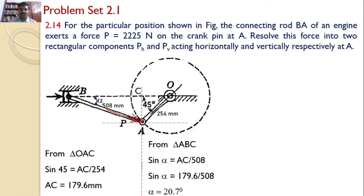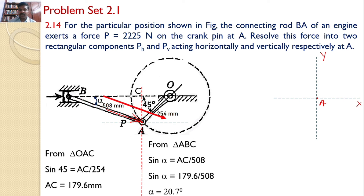Now let us proceed to the actual problem. I will transfer the X and Y axes to a separate space for clarity. This is point A, with the x-axis horizontal and y-axis vertical. Transferring force P: the connecting rod, that is force P, makes an angle alpha with the horizontal. Since if this angle is alpha, the opposite angle is also alpha, and we calculated alpha as 20.7 degrees.